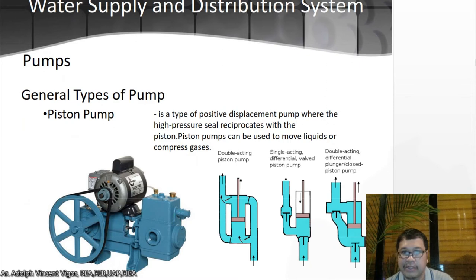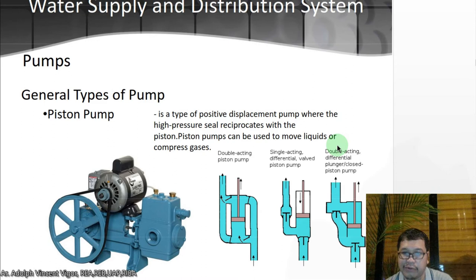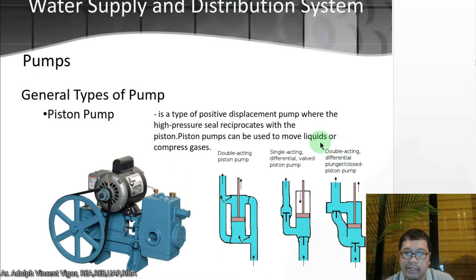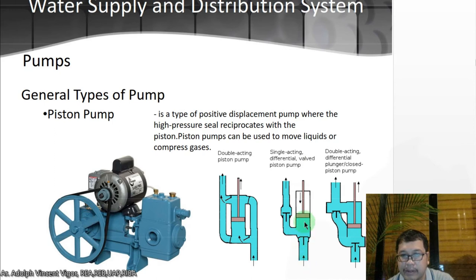Then you have the piston pump. This is a type of positive displacement pump where the high-pressure seal reciprocates with the piston. Piston pumps can be used to move liquids or compress gases — when compressing, you confine the gases; when moving, it's displacement from one point to another. You have a double-acting piston pump, a single-acting differential piston pump, and a double-acting differential plunger piston pump.